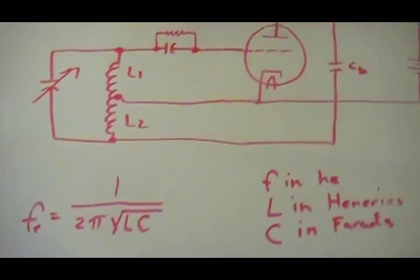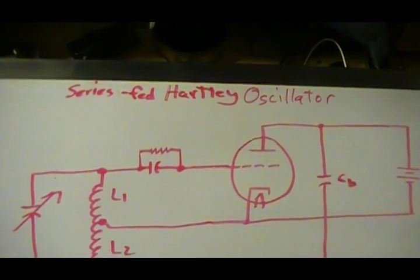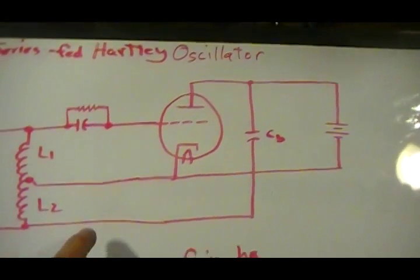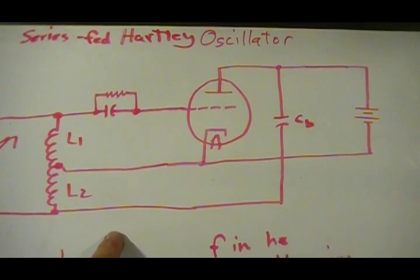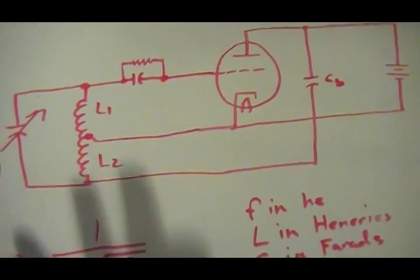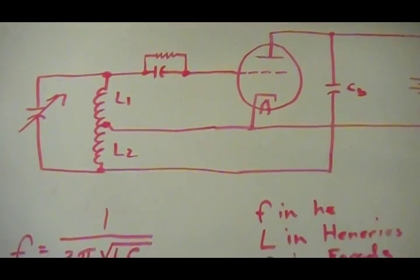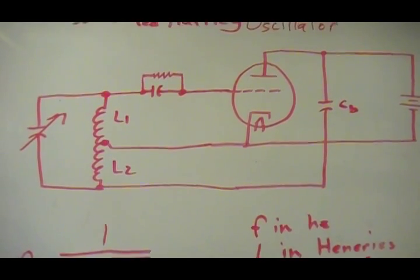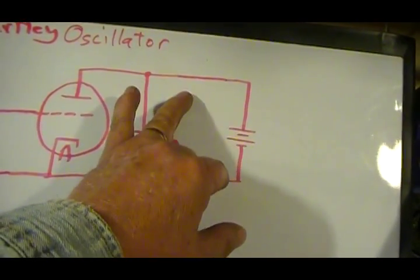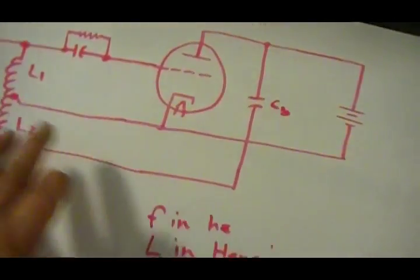Now, signal generators generally use one of two different oscillators. They either use this, which is a Hartley, and these come in either two varieties, series fed or parallel fed. Hartleys can also be used as a local oscillator in some radios. Most signal generators, if they use a Hartley, they'll use a series fed, mainly because there are certain cost savings and certain advantages. With the parallel fed, there has to be an RF choke put in, and it's got to be pretty healthy. So a lot of signal generators will forego that and use a series fed Hartley.